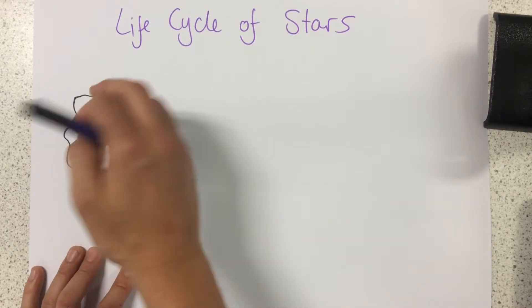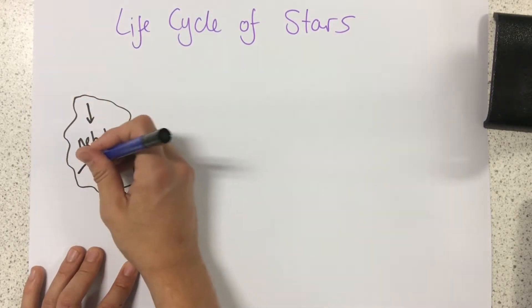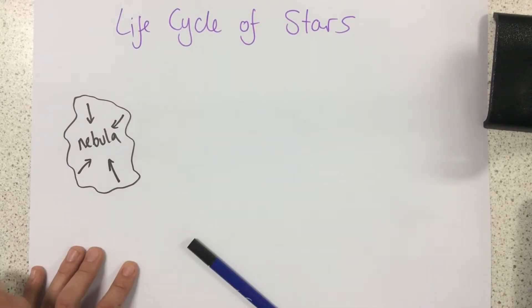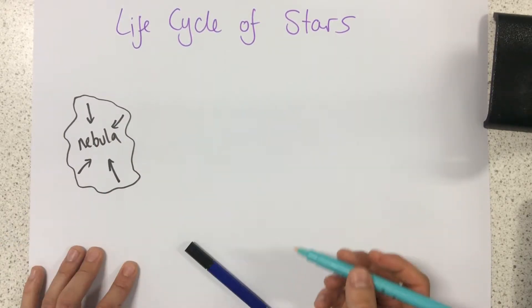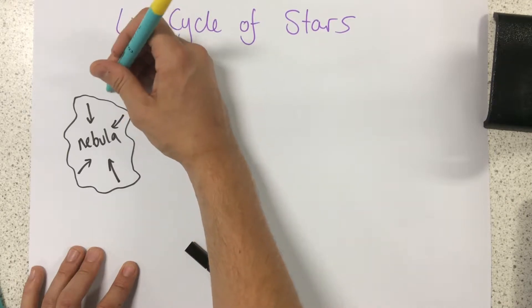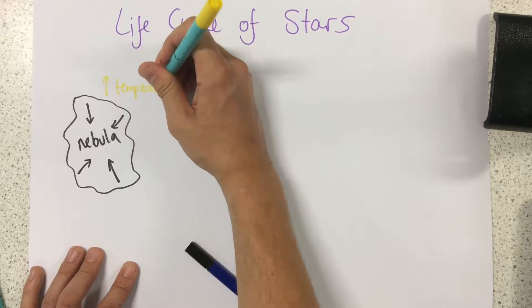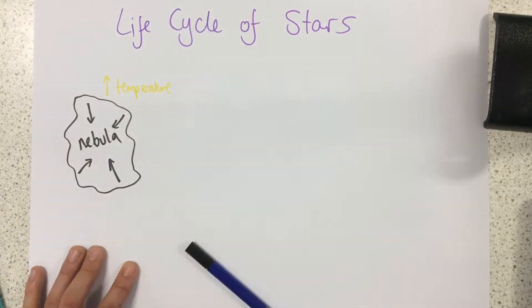What happens is there's a force of gravity that starts to pull all of this dust and gas together. As it does so, its gravitational energy is converted into heat energy and we have a rise in temperature. It starts to get really hot.